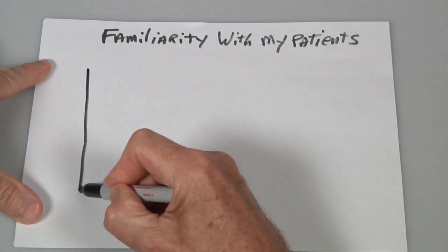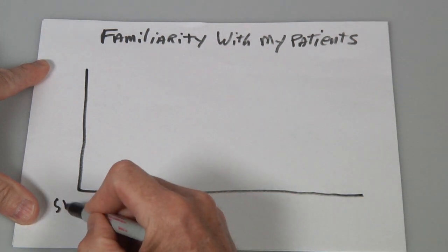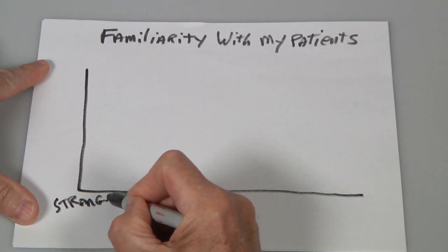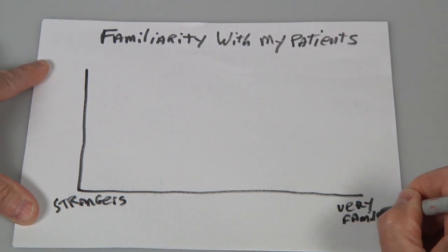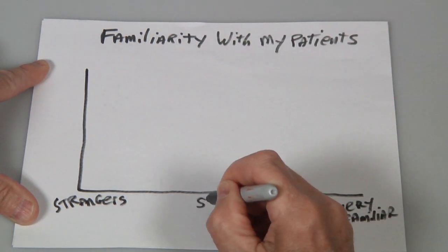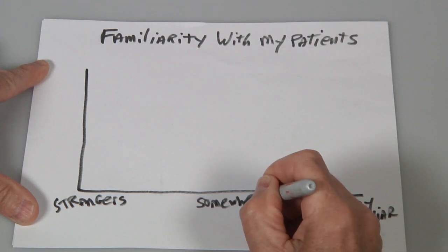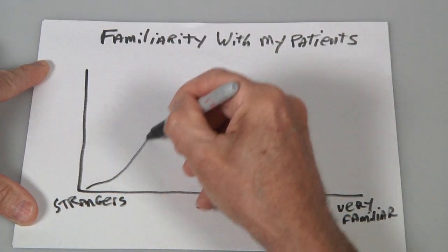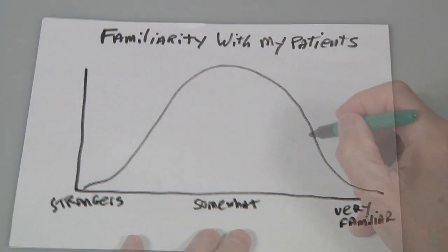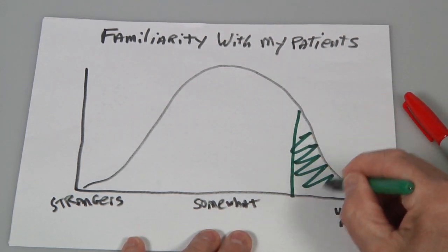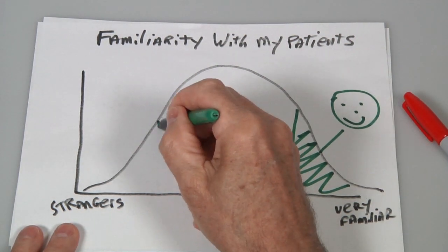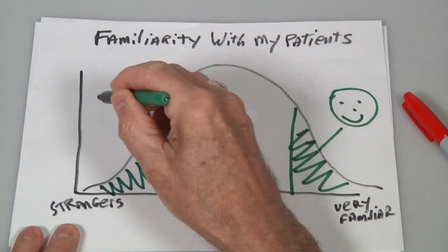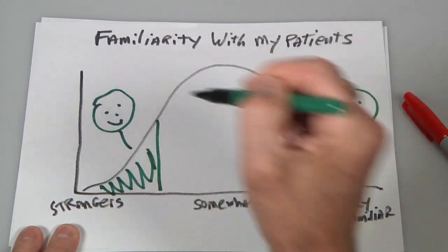Let me tell you why that works. If you were to graph every patient you draw on any given day according to how familiar you are with them, total strangers on one side, people you know very well on the other, and everyone else in between with whom you have some familiarity, maybe they're regulars, maybe you drew them yesterday or the day before, you're never going to misidentify those who you do know, and you're never going to mistake those who you don't know because you're going to go through the proper protocol for all of them.